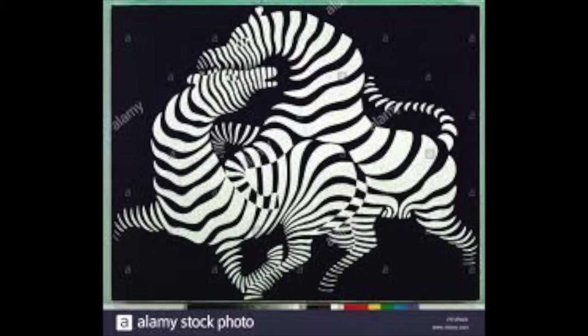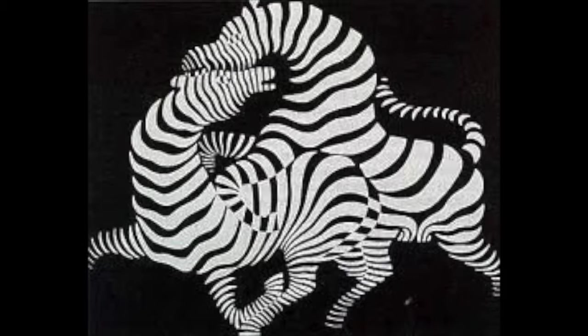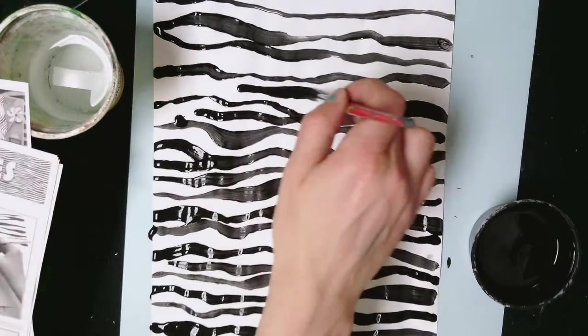The lines in Vasarely's zebras run together and curve to form the illusion of space and form. The shapes that make up the zebras look like they were cut out and pieced back together.